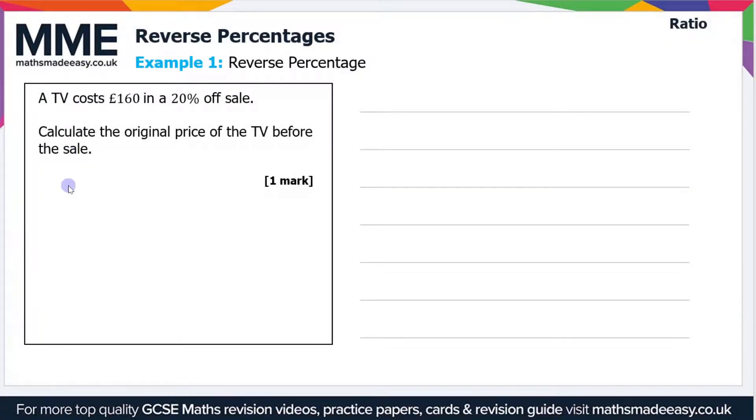Welcome to the Maths Made Easy tutorial on reverse percentages. In this video we're going to go through a few examples. We'll start with this first one: a TV costs £160 in a 20% off sale. Calculate the original price of the TV before the sale. If we've got a 20% off sale, then what we've got is 100 minus 20, which is 80%.